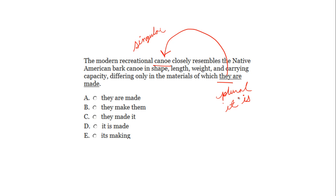The modern recreational canoe closely resembles the Native American bark canoe in shape, length, weight, and carrying capacity, differing only in the materials of which it is made. The right answer is D.